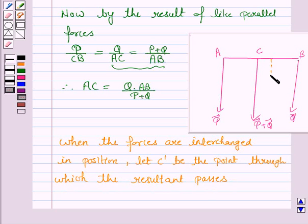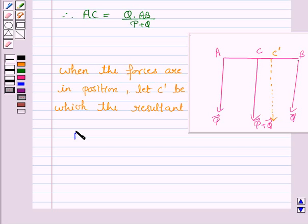So if the forces are interchanged in position then resultant acts through the point C dash. Then again by the theorem of like parallel forces we have AC dash is equal to P into AB upon P plus Q as we discussed above.